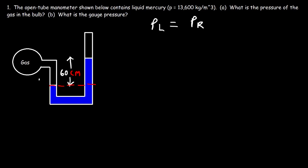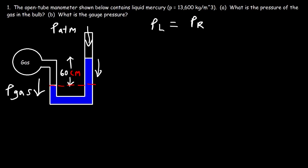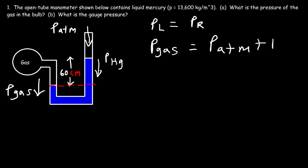On the left side, the only pressure that pushes down on the fluid is the pressure of the gas. On the right side, this side is open to the atmosphere, so the pressure of the atmosphere pushes down on the fluid, and also the weight of the fluid above the reference level also exerts a force. The fluid is liquid mercury, so I'm going to use the chemical symbol Hg to represent mercury. On the left side the only pressure we have is the gas pressure; on the right side we have atmospheric pressure plus the pressure of liquid mercury.